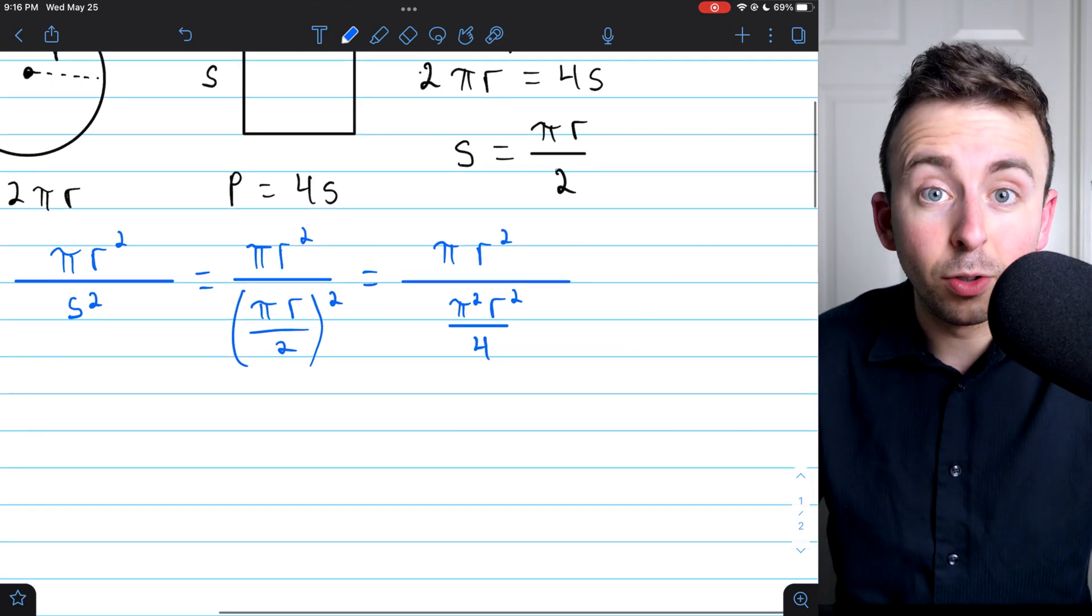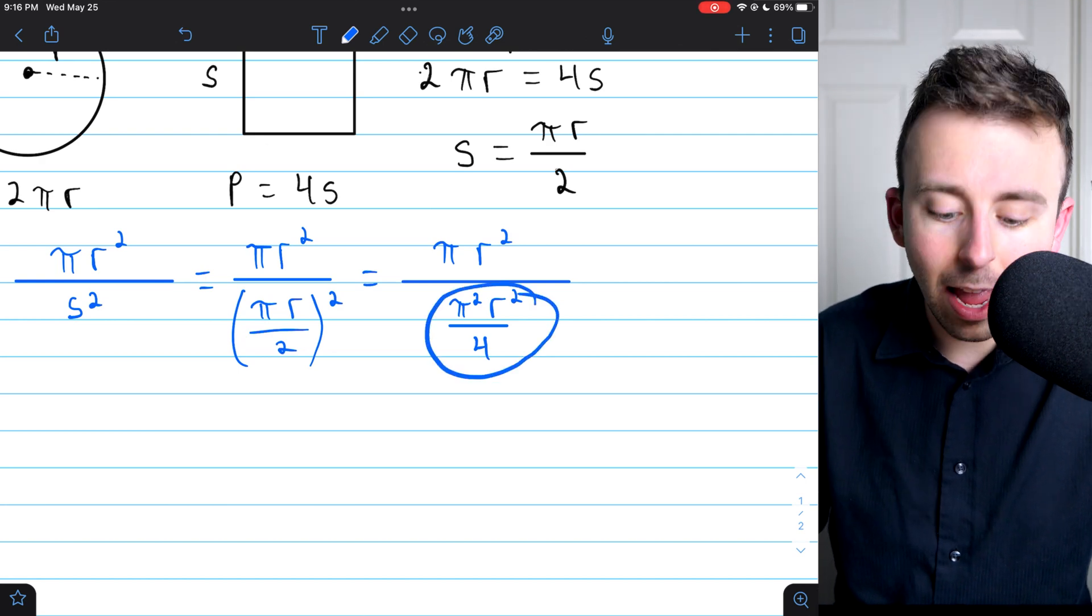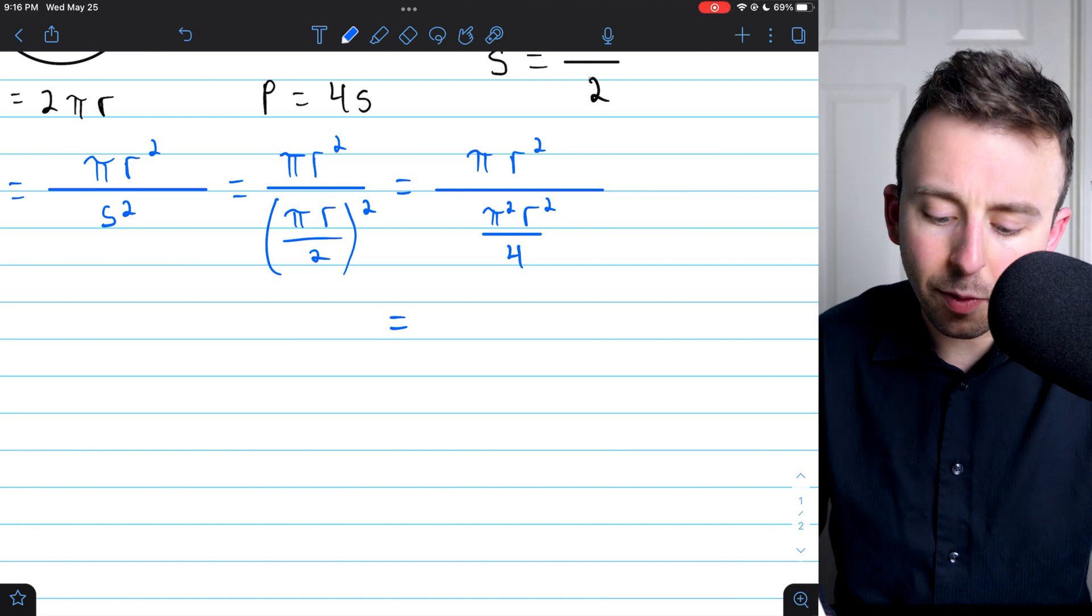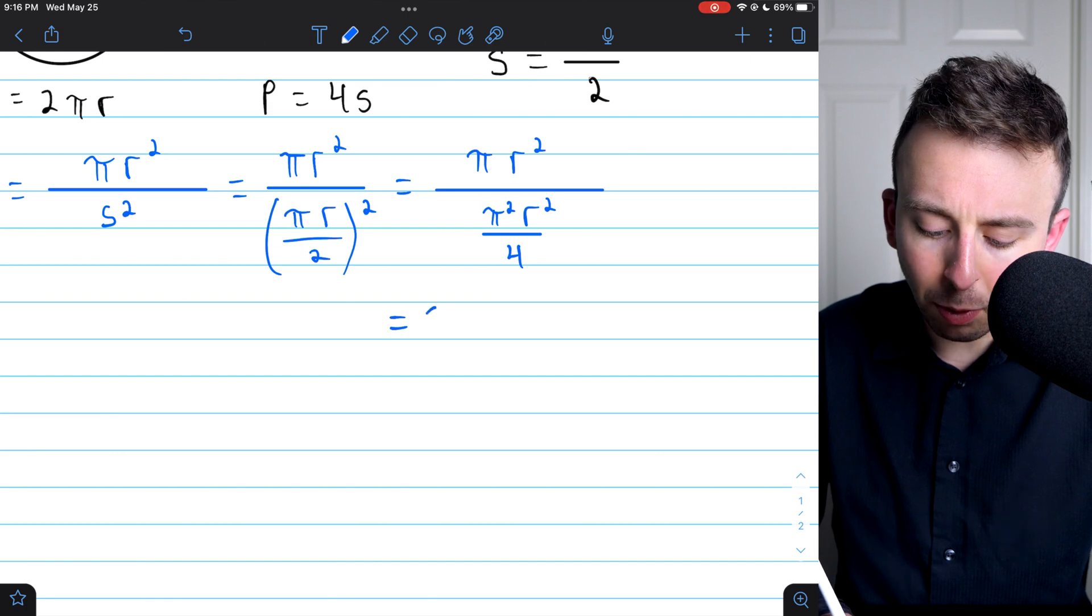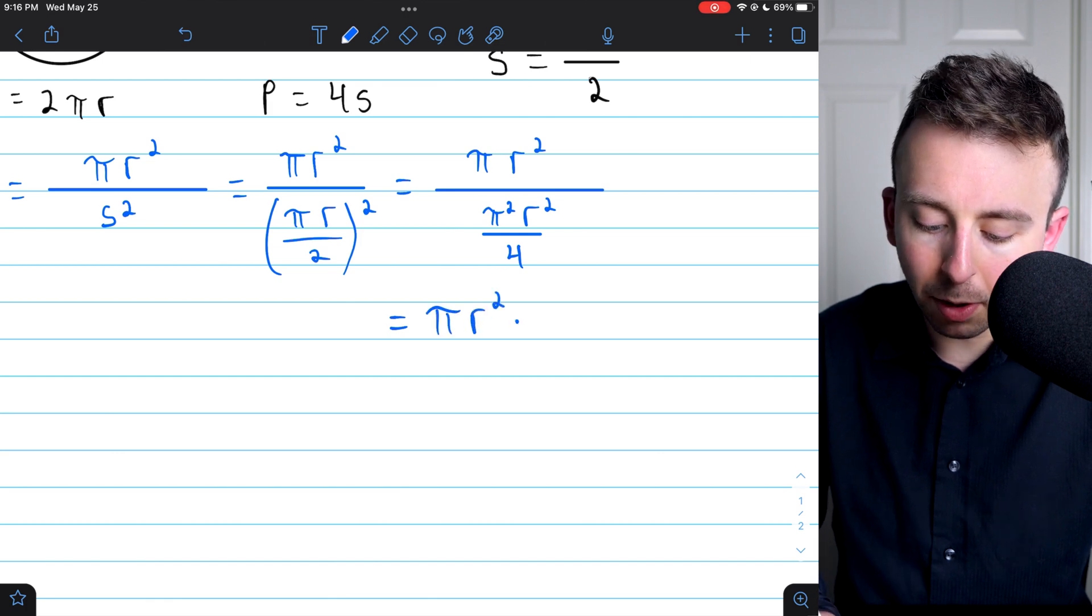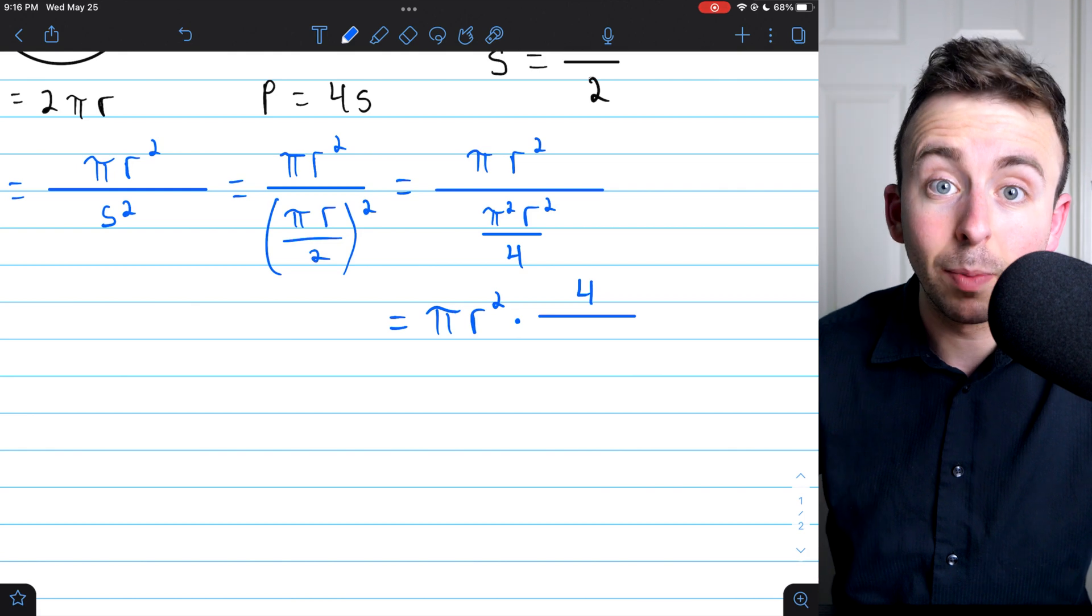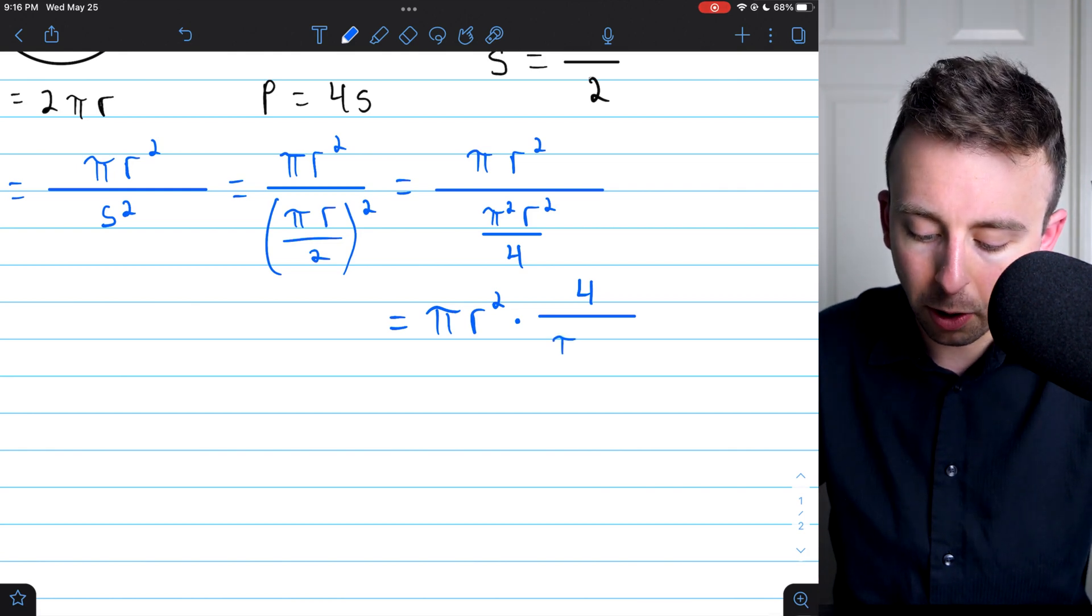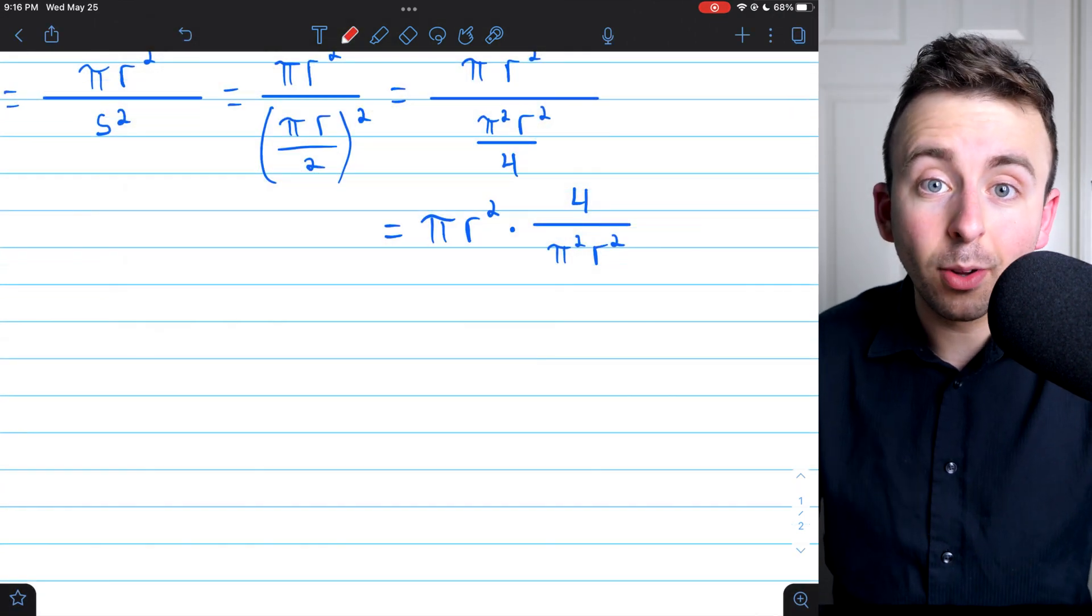Now, we can, of course, do some nice simplification. Dividing by a fraction is the same as multiplying by its reciprocal. So instead of having πr squared divided by this fraction, let's write this as πr squared multiplied by this fraction's reciprocal. So we're multiplying by, reciprocal just means flip the fraction. So we're multiplying by 4 over π squared r squared.